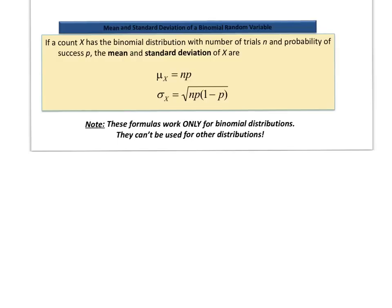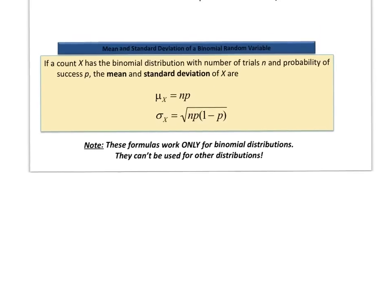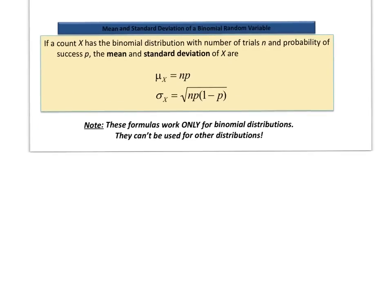In the binomial distribution, there are two outcomes, a fixed number of trials, the situations are independent of one another, and all probabilities are the same. We can actually calculate the mean and standard deviation in a different way that only works for binomial situations, and the formulas are a lot easier to use than the ones with the fancy expected value formulas. These two formulas are on your formula sheet when you take the AP exam, but again this only works for binomial distributions.